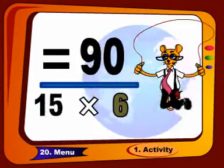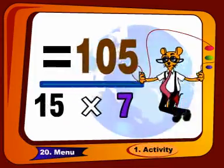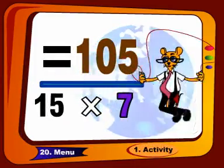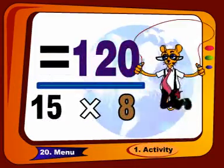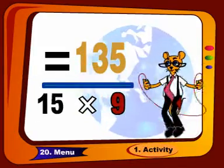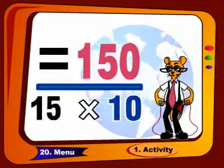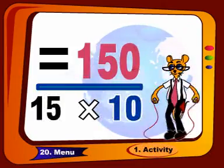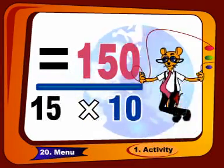15 sixes are 90, 15 sevens are 105, 15 eights are 120, 15 nines are 135, 15 tens are 150.